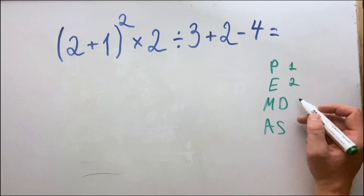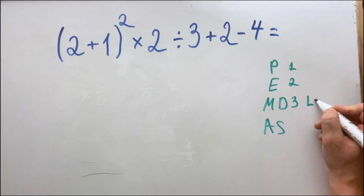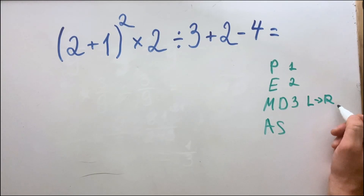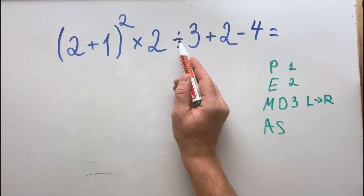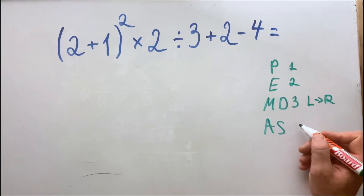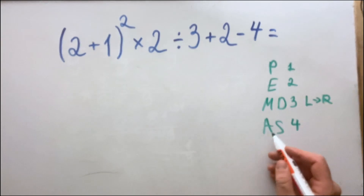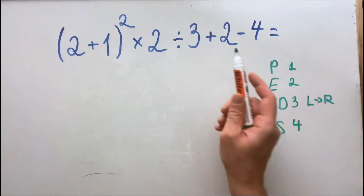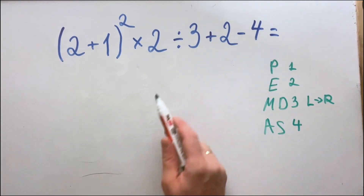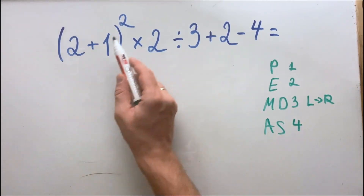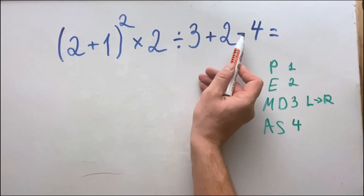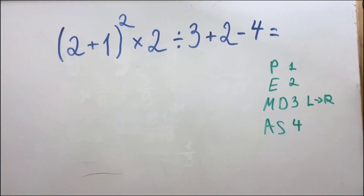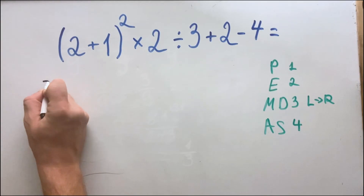Multiplication and division must be done in the third place, from left to right. Here we have multiplication and division, so we do multiplication first, then division. A and S stand for addition and subtraction and must be done in the fourth place. So: first parenthesis, then exponents, then multiplication and division, then addition and subtraction. Let's start!